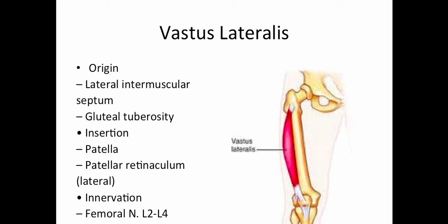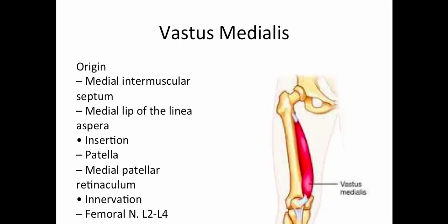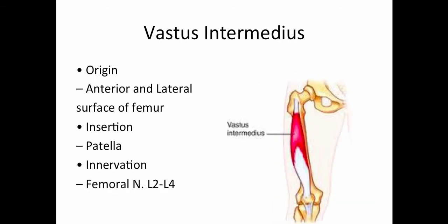The vastus lateralis originates on the lateral intermuscular septum and the gluteal tuberosity. It inserts on the patella and the patellar retinaculum. The vastus medialis originates on the medial intermuscular septum and the medial lip of the linea aspera, and inserts on the patella and the medial patellar retinaculum. The vastus intermedius originates on the anterior and lateral surfaces of the femur and inserts on the patella.